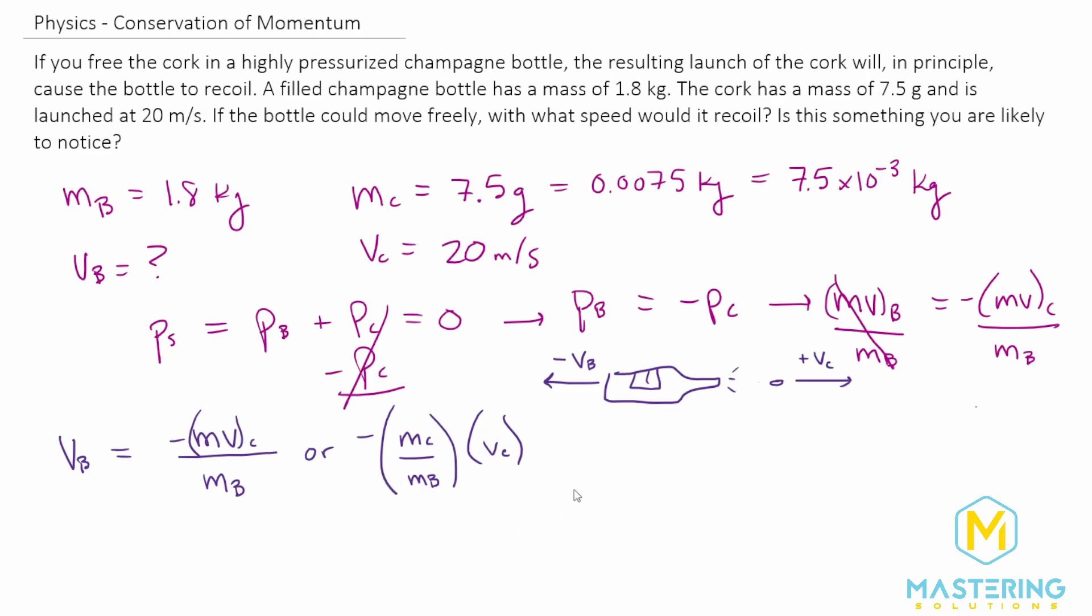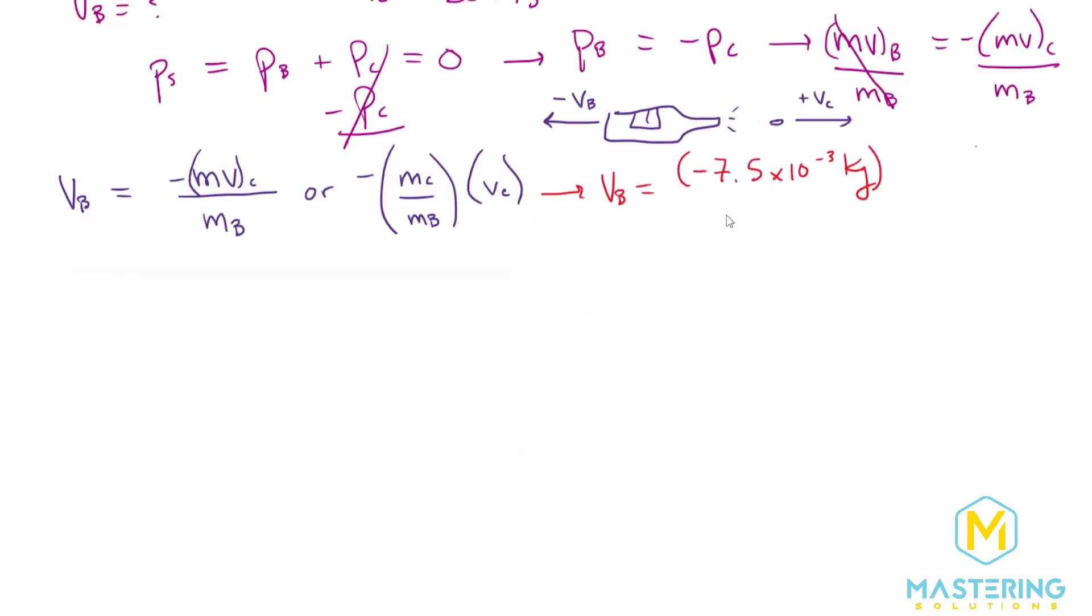So when we plug into our equation, we have the final velocity of the bottle will be equal to negative 7.5 times 10 to the negative 3 kilograms. And we're going to divide that by the mass of the bottle, which we said was 1.8 kilograms. And now we'll multiply both of those by 20 meters per second, which was the final velocity of the cork.